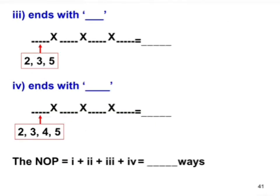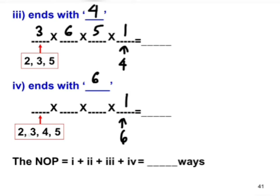If the number ends with four: four occupies the last place — one way. The first place can be two, three, or five — three choices. Taking out these two digits leaves six for the second place and five for the third, giving 90. If it ends with six: six in the last place — one way; the first place can be two, three, four, or five — four choices; leaving six and five for the remaining places, giving 120.